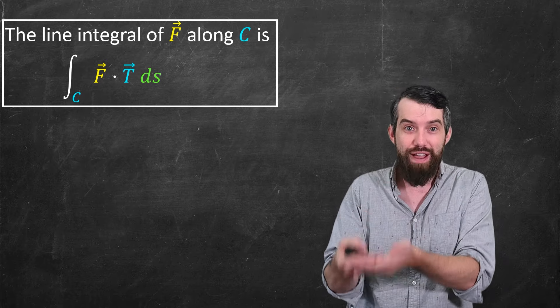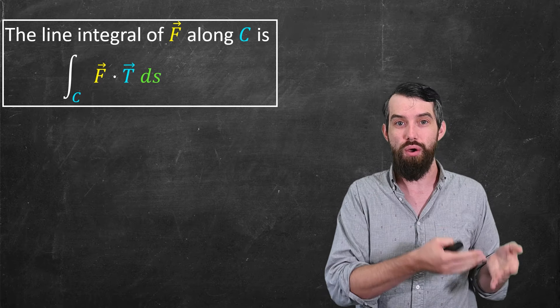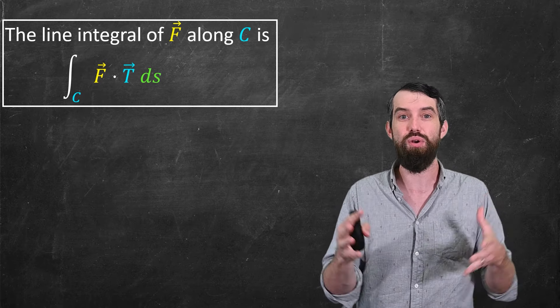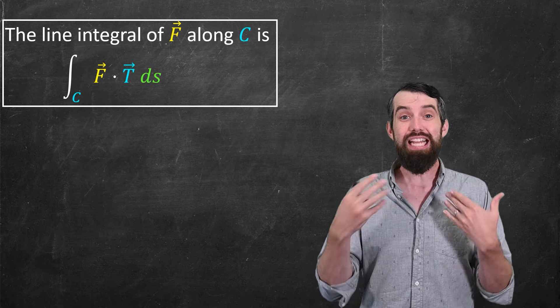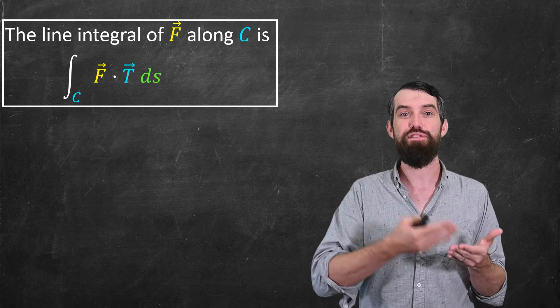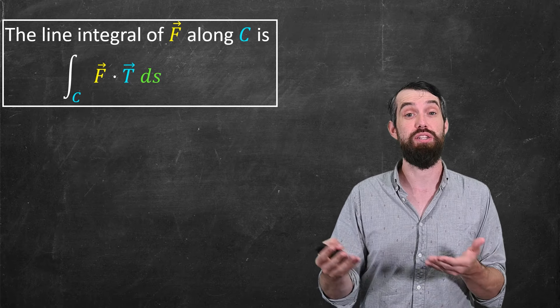I just do the line integral of a vector field f along the curve c is just given by this integral over c, the same line integral we've seen before, it's just that the integrand is the f dot t, and then integrated with respect to ds.